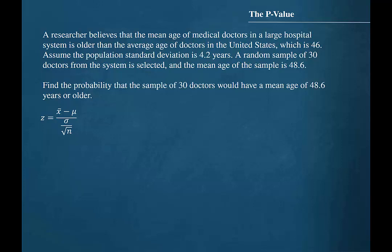We will begin by calculating the z-score associated with the sample mean. We will substitute the sample mean, population mean, population standard deviation, and sample size into the formula. This will result in a z-score of 3.39.